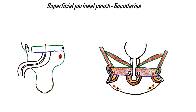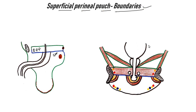First is the sagittal section. This is the deep perineal pouch, and this is the superficial perineal pouch. The deep lies above the perineal membrane, and the superficial lies below the perineal membrane. This is the sagittal section. This is the coronal section.